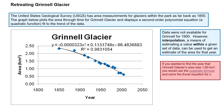If you want to figure out what year the Grinnell Glacier's area was 1.6 square kilometers, you can use the quadratic equation. If you've never seen the quadratic equation, I'm going to show it to you in a minute — it's kind of ugly. And then you can use Excel to solve for X, which would be the year that we're looking for.